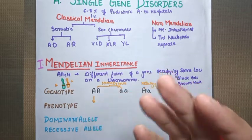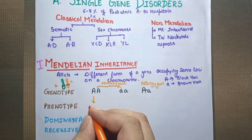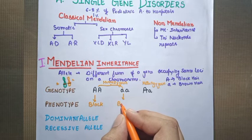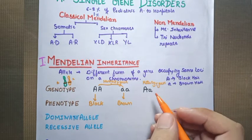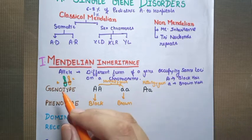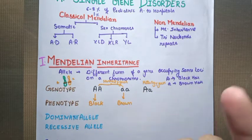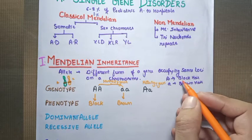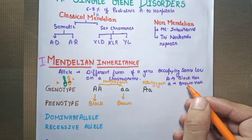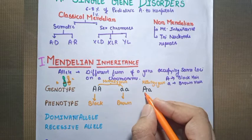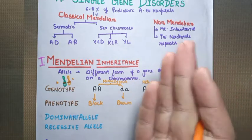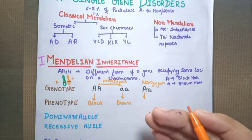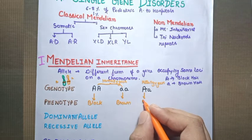If both genes code for black hair, the phenotype or physical appearance will obviously be black hair. If both code for brown hair, the physical appearance will be brown hair. But the question arises: if both black hair and brown hair genes are present, which one expresses itself? There is a concept of dominant and recessive. If black is dominant over brown, then when black is present, brown cannot express itself. The favor goes to the dominant gene — in this case, black hair will be expressed.